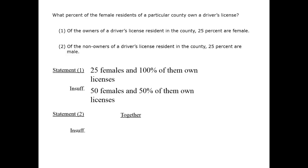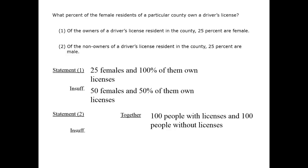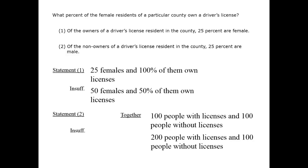Combining the statements, we could imagine a case in which we have 100 people with licenses and 100 people without licenses. That case is permitted by the joint data, and in that case we would be able to calculate the percentage of females with licenses. But we could still double the number of people with licenses — this would be allowed by the data and it would change the answer. So, the statements together are insufficient.